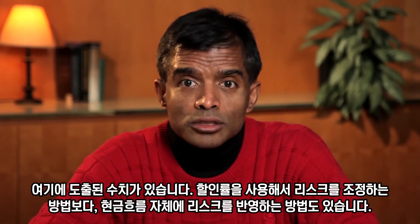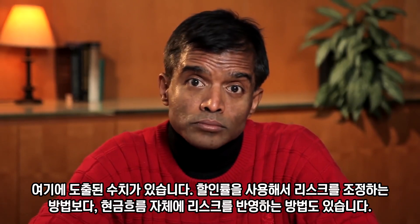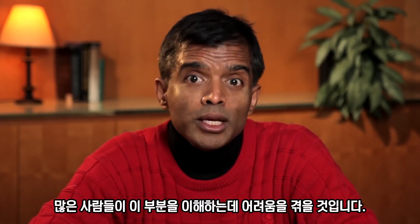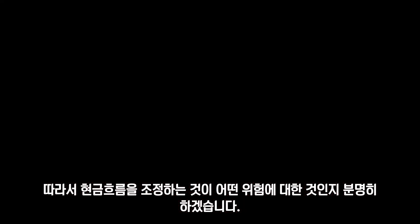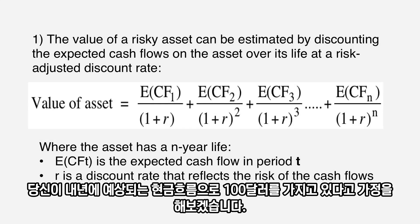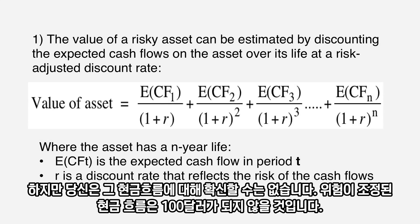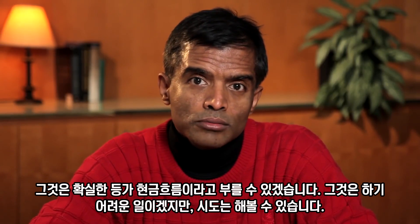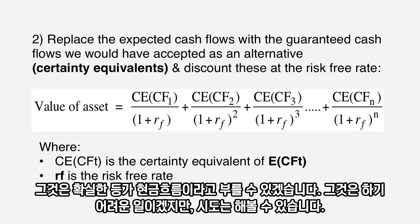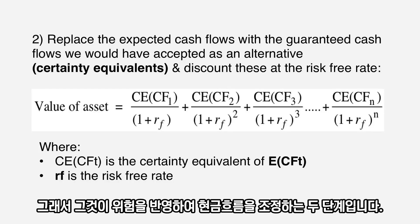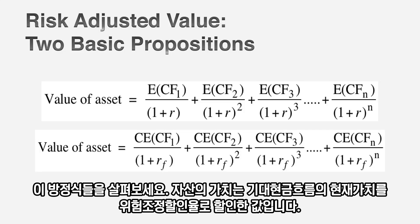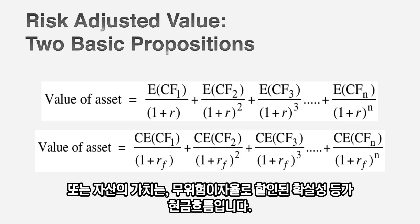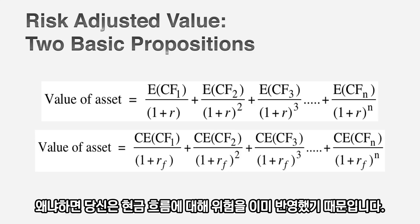Rather than adjusting the discount rate for risk, you can try to adjust the cash flow for risk. Let me be clear about what risk adjusting the cash flows would mean. Let's assume you have $100 in expected cash flows next year, but you're uncertain about those cash flows. Your risk adjusted cash flow will not be $100 — it'll be whatever you would take as a replacement for the $100 as a guaranteed cash flow. That's called a certainty equivalent cash flow. It's difficult to do, but you can do it. So the value of an asset is either the present value of expected cash flows discounted at a risk adjusted discount rate, or the certainty equivalent cash flow discounted at a risk free rate.